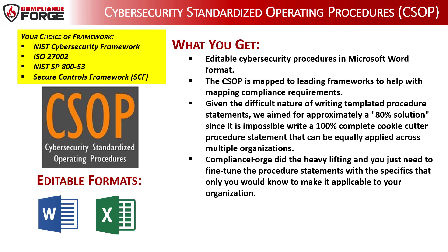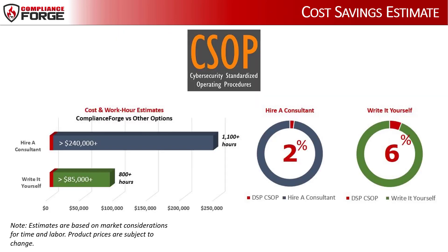It is a matter of adding details to the template as compared to trying to write procedures from scratch. From a cost comparison perspective, for your internal staff to generate comparable documentation to the DSB version of the CSOP, it would take an estimated 1,200 internal staff work hours, equating to approximately $85,000 in staff-related expenses, and take approximately 9 to 18 months of development time where your staff would be diverted from other work.